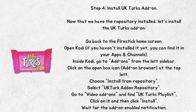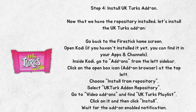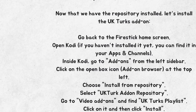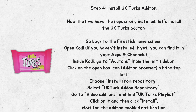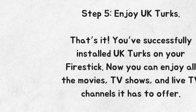Step 4: Install the UK Turks add-on. Now that we have the repository installed, let's install the UK Turks add-on. Go back to the Fire Stick home screen and open Kodi. If you haven't installed it yet, you can find it in your Apps and Channels. Inside Kodi, go to Add-ons from the left sidebar. Click on the open box icon — the add-on browser — at the top left. Choose Install from Repository, select UK Turks Add-in Repository, go to Video Add-ons and find UK Turks Playlist. Click on it, then click Install. Wait for the add-on enabled notification.